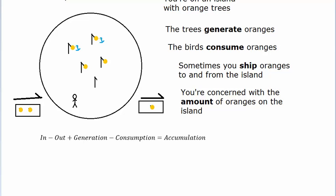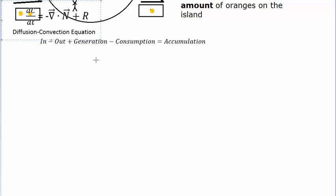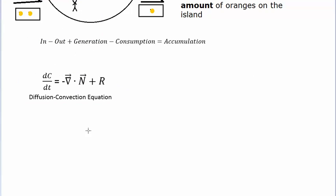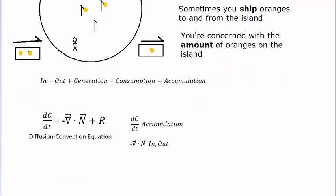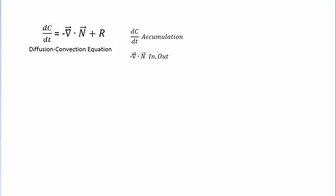The transformation of this general balance gives us the mathematical expression we call the Diffusion-Convection Equation. The dC/dt term is what we associate with accumulation — how much concentration of your species is present over time, or how many oranges are on the island. The del·N term represents in-fluxes or out-fluxes — the shipping happening into or out of the island.